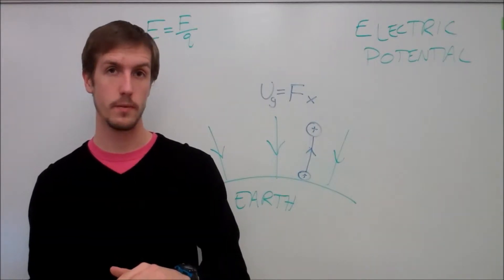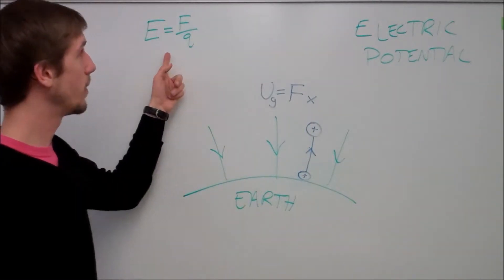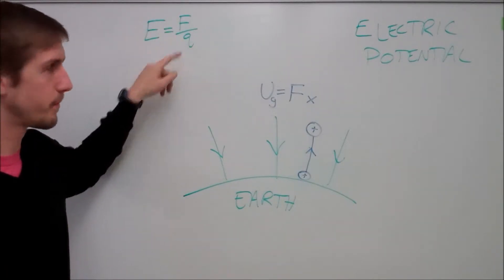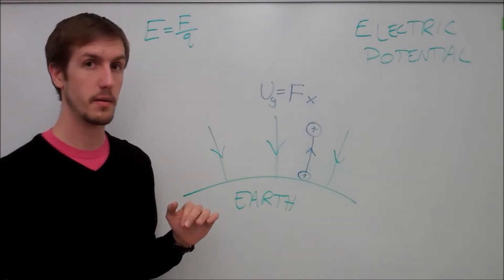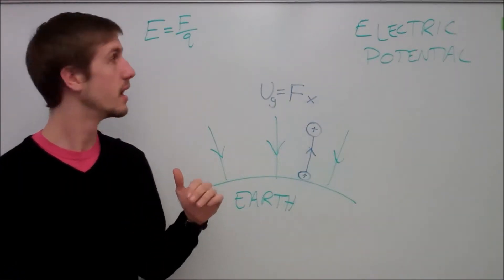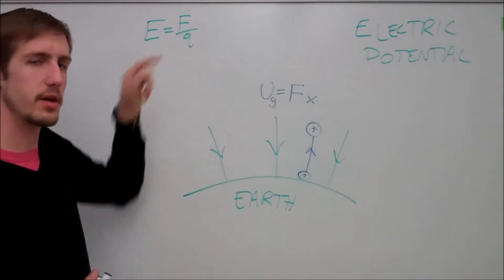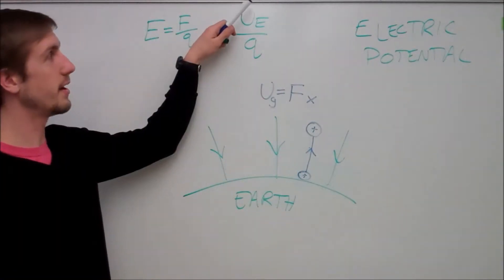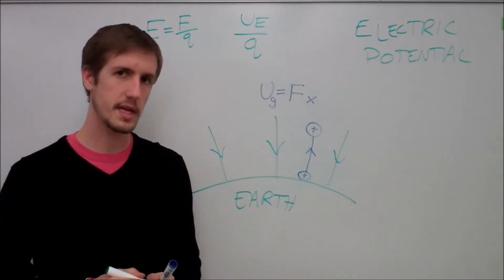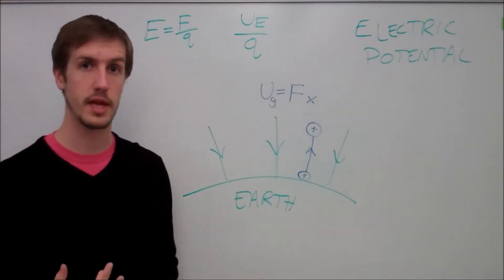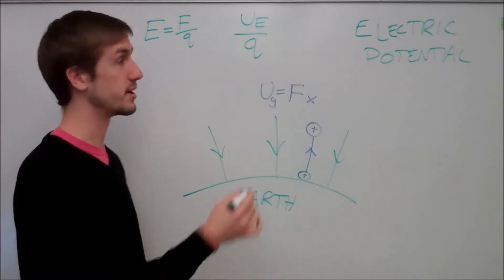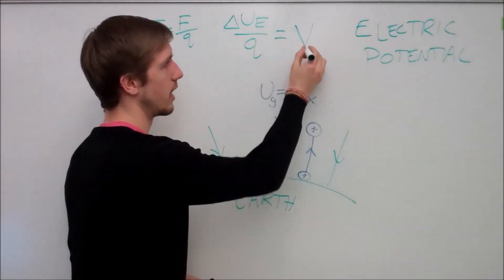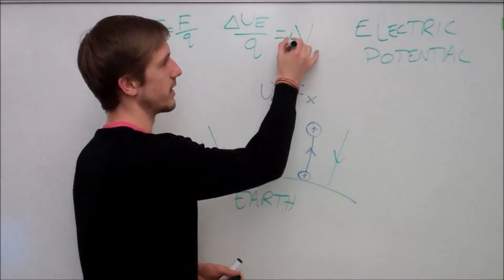Now let's relate it back to electric fields. Electric field is equal to force per charge, and if I multiplied my force by x, I should get the value of potential energy. So potential energy over my charge is how we figure out the electric potential. And when I change this potential energy, that is the equivalent of the voltage — my change in voltage, delta V.